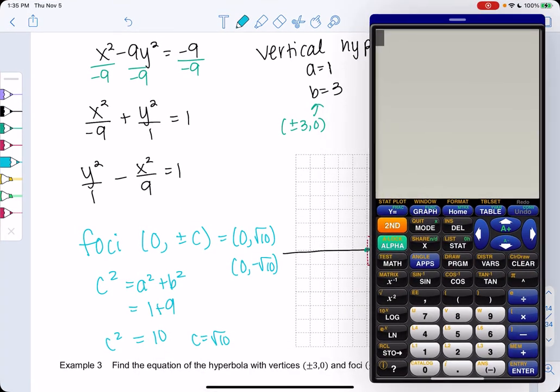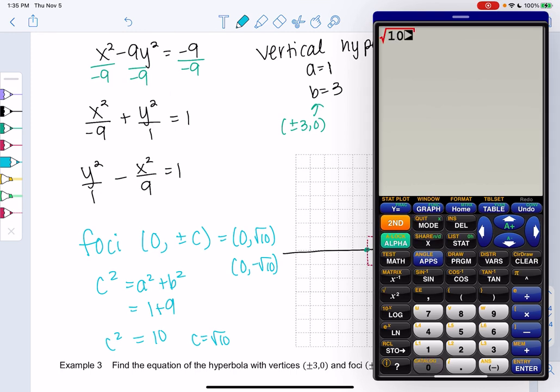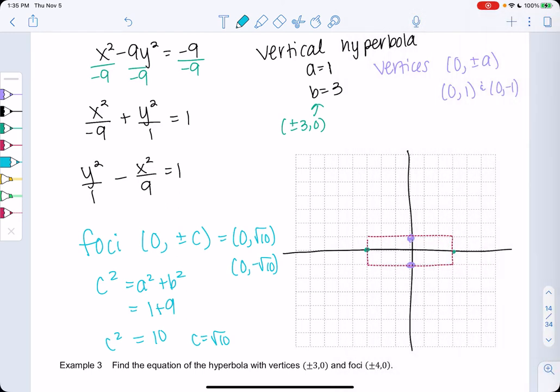So 0 square root 10 and 0 negative square root 10. And I usually leave it exact, but we'll just approximate to get an idea of where that is. So around 3.16. So one, two, three. We'll go a little bit past three. A little bit past three. Perfect.